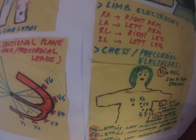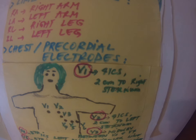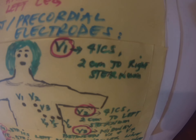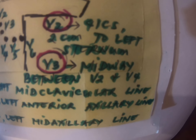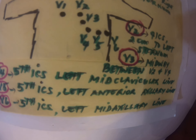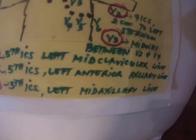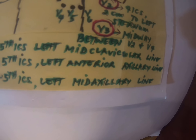V1 is located at the fourth intercostal space, two centimeters to the right sternum. V2 is on the left side, same fourth intercostal space. V3 is midway between V2 and V4. V4, V5, and V6 are all on the fifth intercostal space. V4 is at the left mid-clavicular line, V5 is at the left anterior axillary line, and V6 is at the left mid-axillary line.